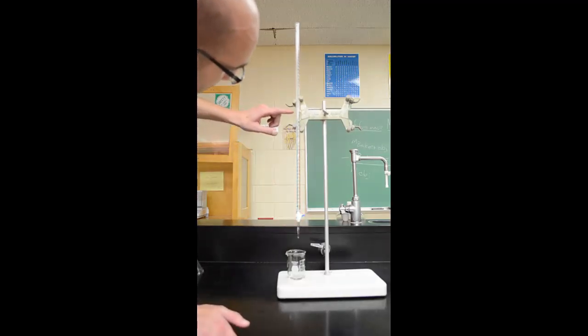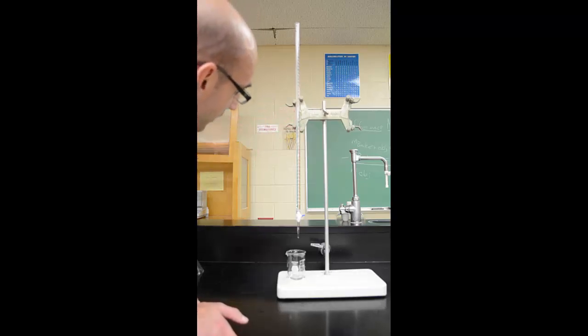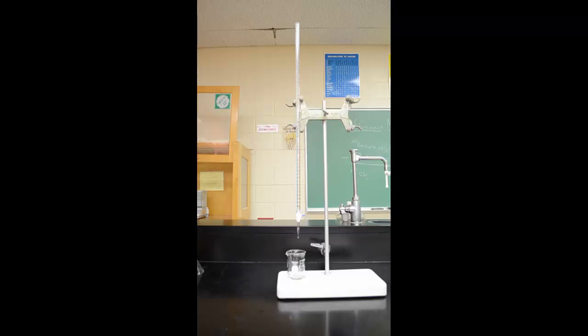I will turn this off and make my final volume reading. So 25, 26, 27, between 27 and 28 I would read that as 27.70. That's the number that I would substitute in as my final. Final 27.70 minus my initial number, and that is the volume delivered to my beaker.